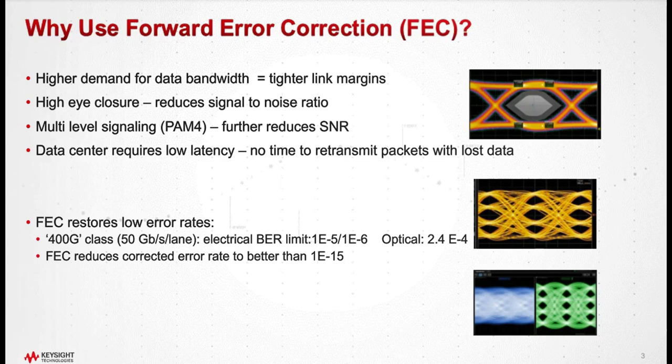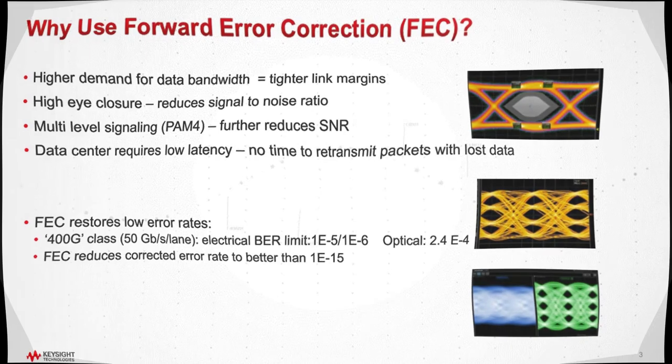In the 400G world that we're working at now, the electrical test criteria limits are 1E-5 or 1E-6. On the optical side, it's 2.4E-4. That's obviously a pretty bad error rate, but this is before we apply FEC. When we go through the FEC decoder, we get back to a corrected error rate better than 1E-15, so essentially error-free.